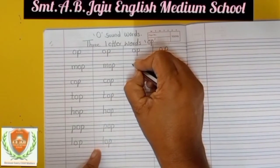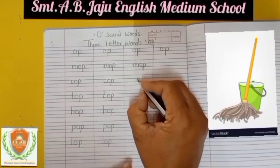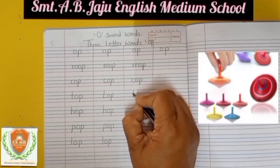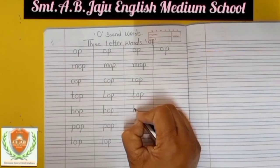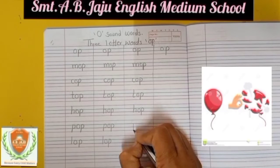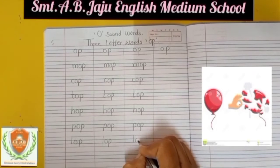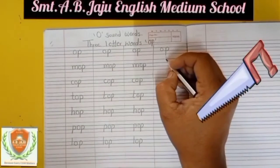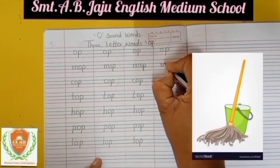Again we will write down here. M-O-P, mop — mop means pocha. See this picture. C-O-P, cop — cop means police. T-O-P, top — top means bhavra, this is a toy. H-O-P, hop — hop means chalang lagana. P-O-P, pop — pop means achanak phootna. L-O-P, lop — lop means karbar, cutting trees' branches or any wooden thing.